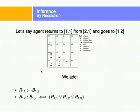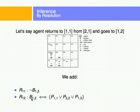For example, let's say the agent returns to 1,1 from 2,1 and goes to 1,2. We can add a few rules. There's no breeze in 1,2, so the agent is perceiving no breeze there. And we know that if there's a breeze in 1,2, then there's a possibility of pits in these three squares. So we're going to do this inference by resolution. After we've moved, we add these rules.